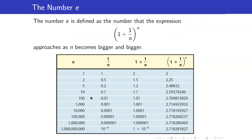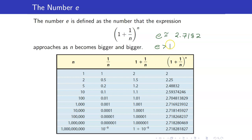Before we proceed, let me define the number e. The number e is defined as the number that the expression 1 plus 1 over n, raised to n, approaches as n becomes bigger and bigger. As you can see from the table, n becomes bigger and bigger and the value approaches this number. The number e is an irrational number, just like pi, and it is approximately equal to 2.7182. Notice that e is greater than 1, so the graph of y equals e to the x is increasing.